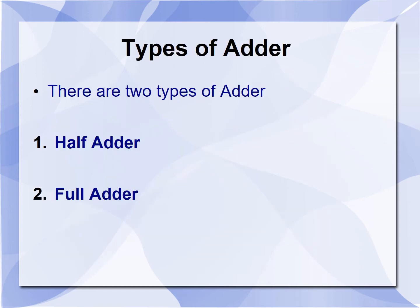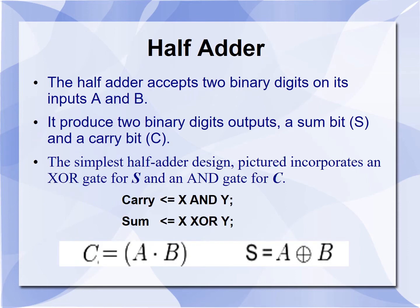There are two types of adders: half-adder and full-adder. The half-adder accepts two binary digits on its inputs A and B, and produces two binary outputs: sum and carry. The simplest half-adder design incorporates an XOR gate for sum and an AND gate for the carry. If X and Y are the inputs, carry is X AND Y, and sum is X XOR Y.